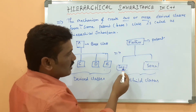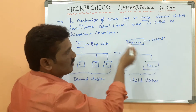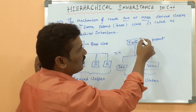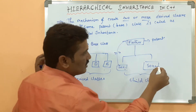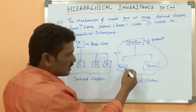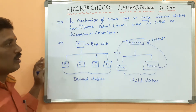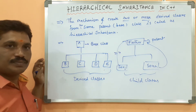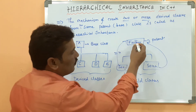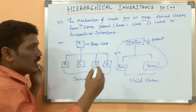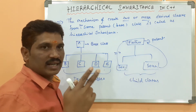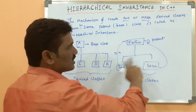The father is the parent. Son one is created from father, and son two is also created from father. Both son one and son two can access the properties from the father class. Both sons have the right to access the properties from the father, meaning both derived classes inherit from the same parent.